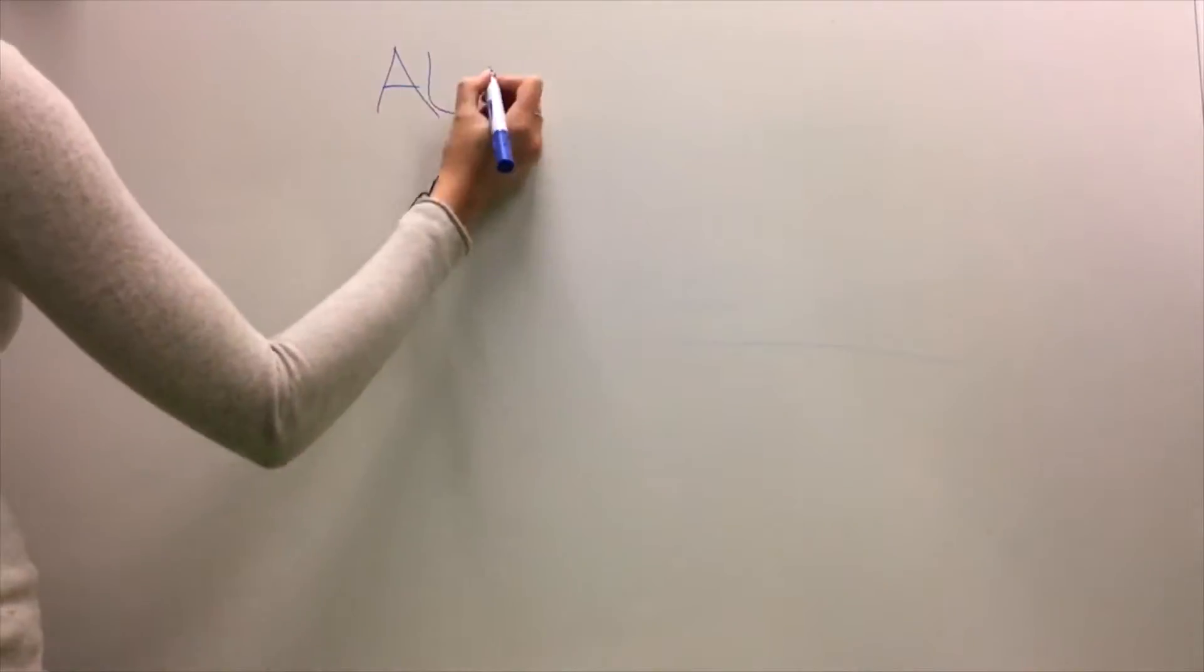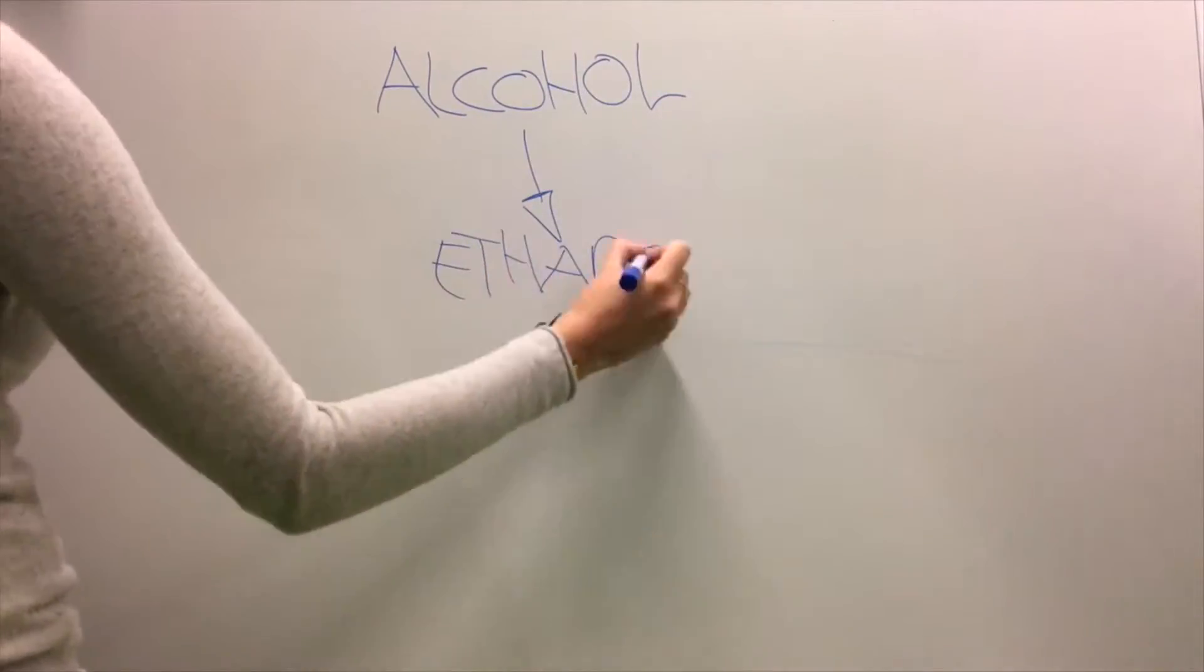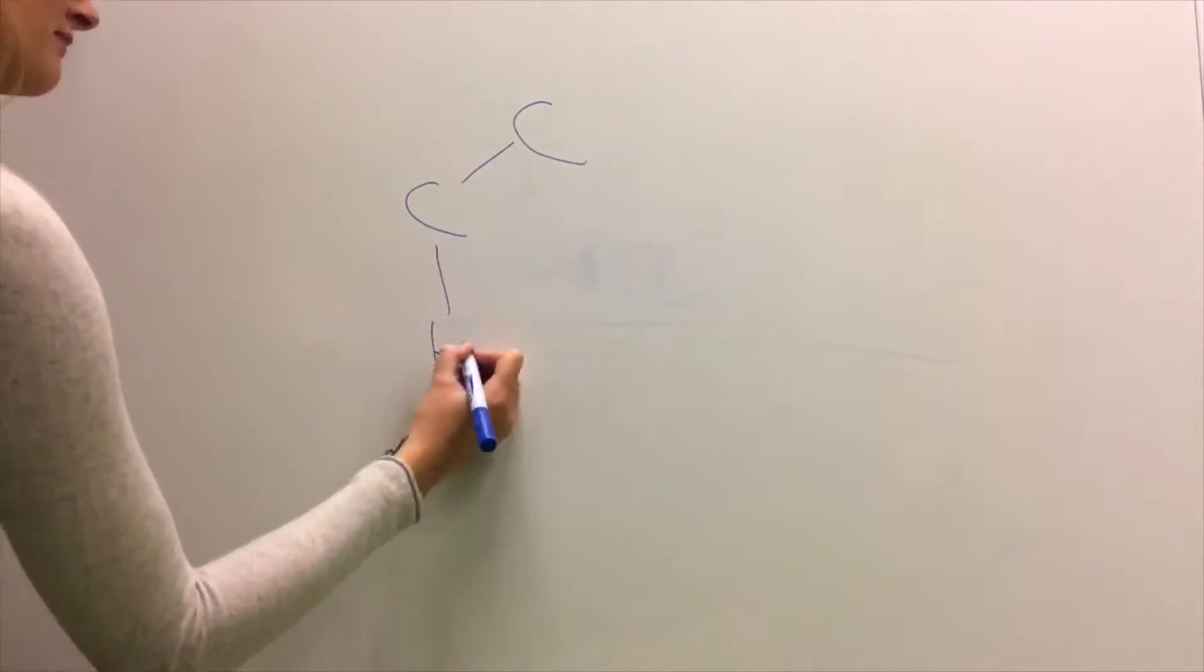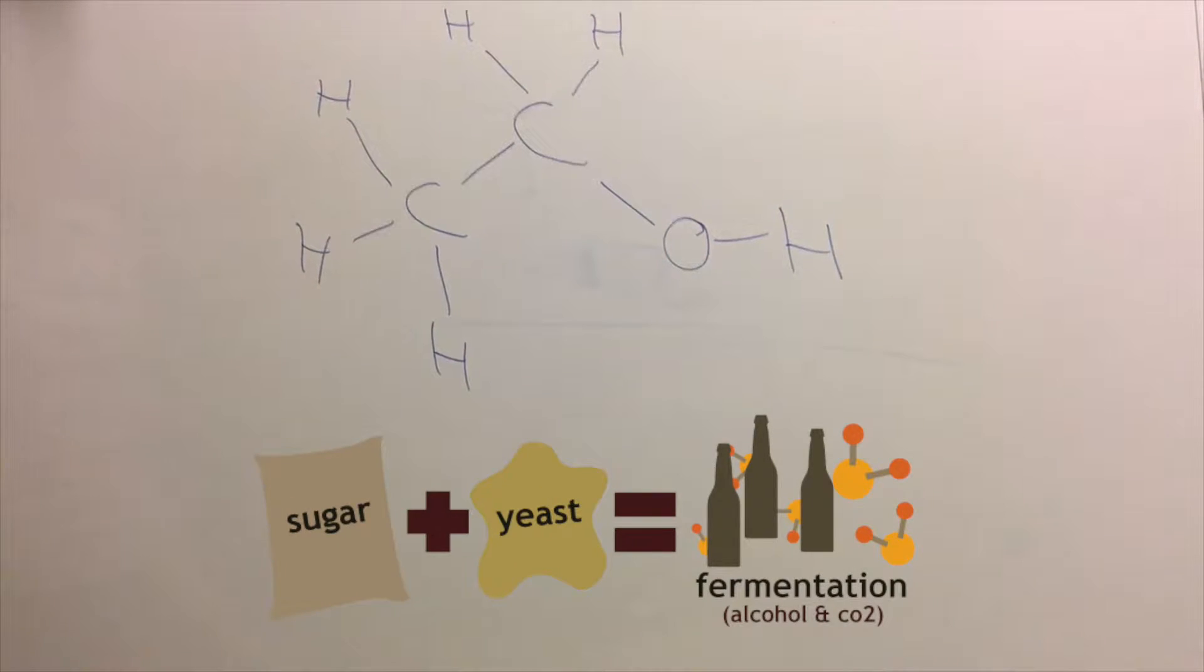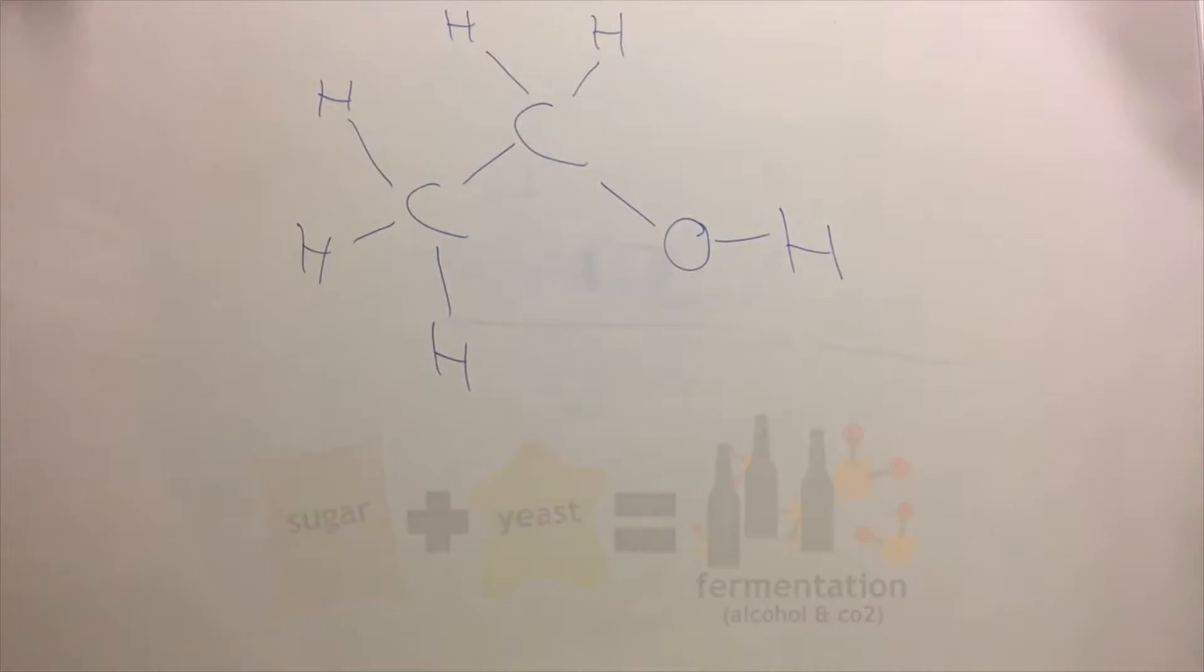The principal type of alcohol found in alcoholic beverages is ethanol. Ethanol is produced using the process called fermentation where yeast break down sugar into alcohol and carbon dioxide.